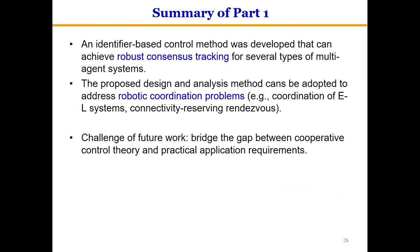Here's a quick summary for the first part: an identifier-based control method was developed that can achieve robust consensus tracking for several types of multi-agent systems. The proposed design and analysis method can be adopted to address robotic formation control problems. One challenge for future work is how to bridge the gap between cooperative control theory and practical application requirements.